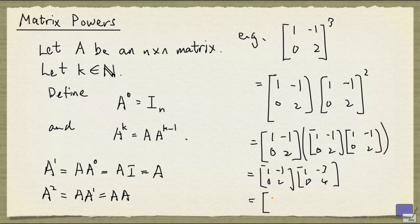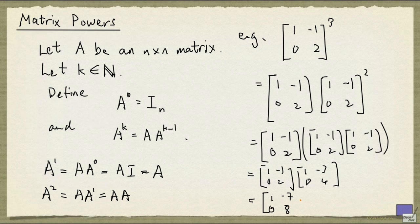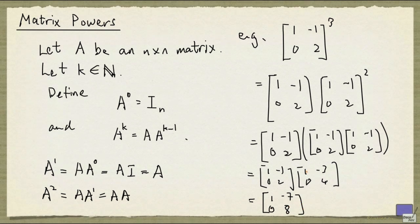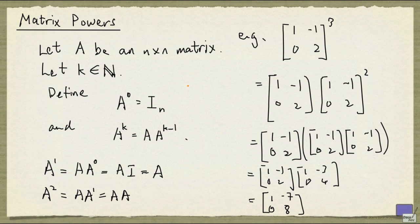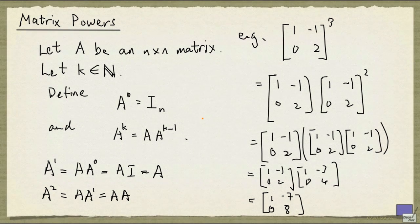And so the final answer is going to be 1 minus 7, 0, 8. So in casual terms, A to the power k means you take the product of k copies of A.